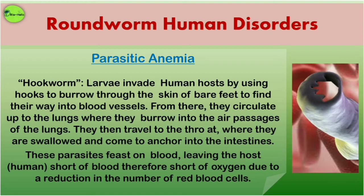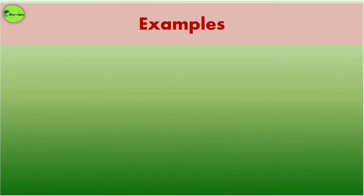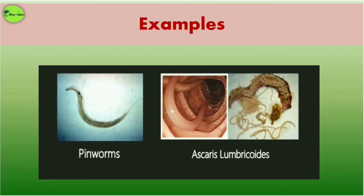From the blood vessels, hookworm larvae circulate up to the lungs, where they burrow into the air passages. They then travel into the throat, are swallowed, and come to anchor in the intestines. These parasites feed on blood, leaving the human host short of blood and therefore short of oxygen due to a reduction in the number of red blood cells, causing parasitic anemia.